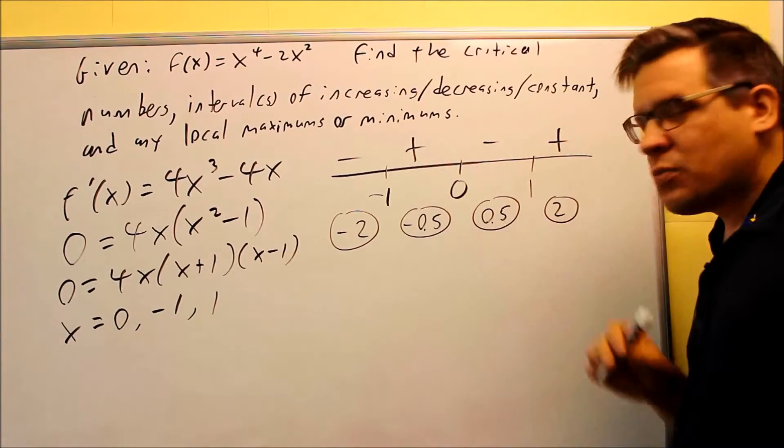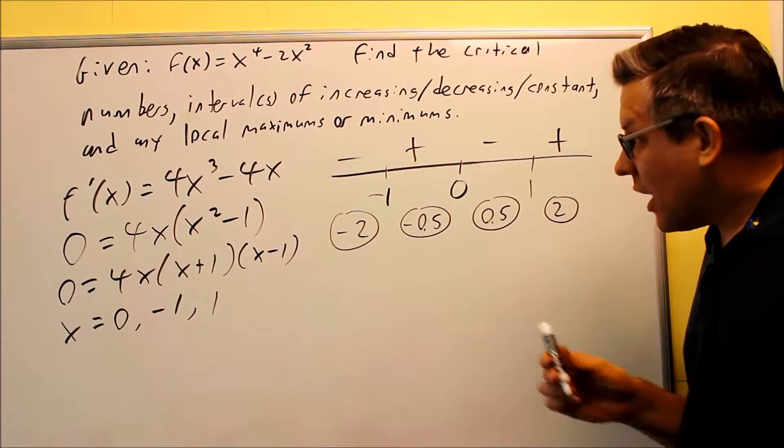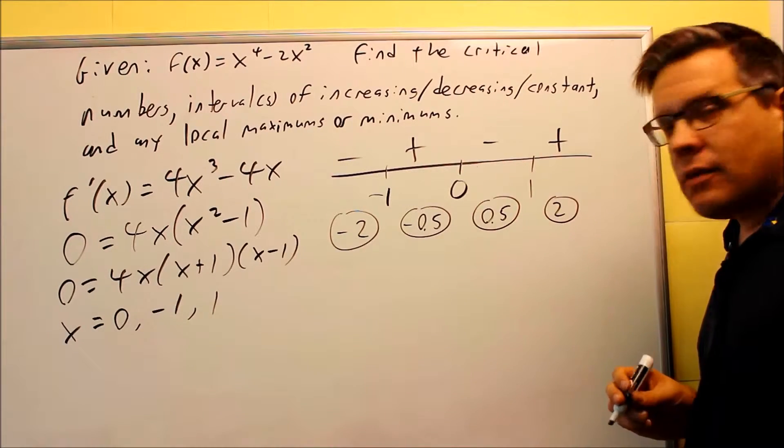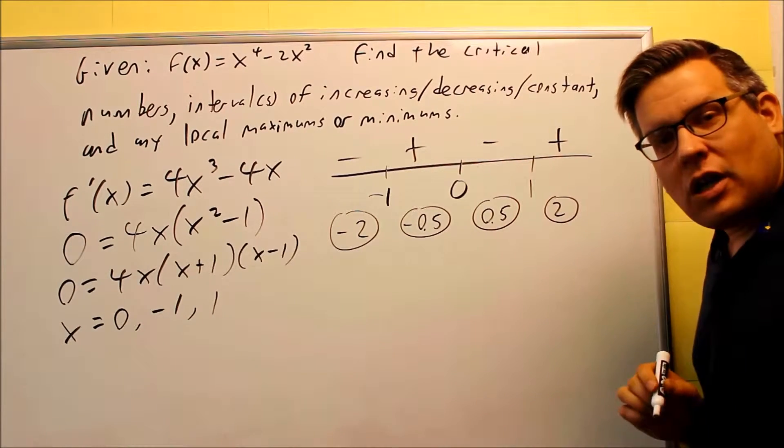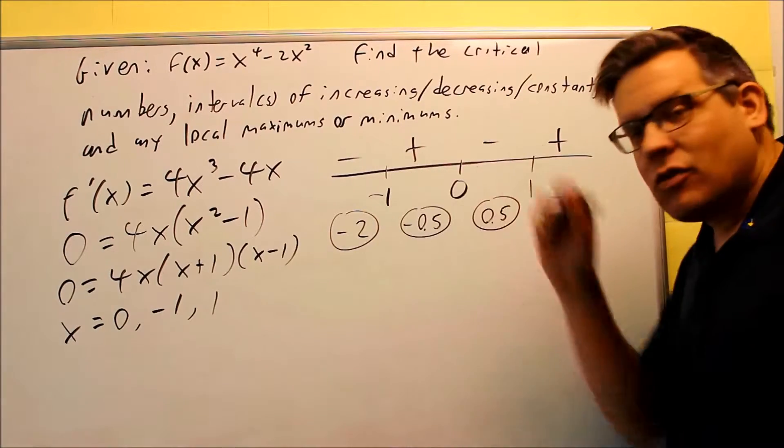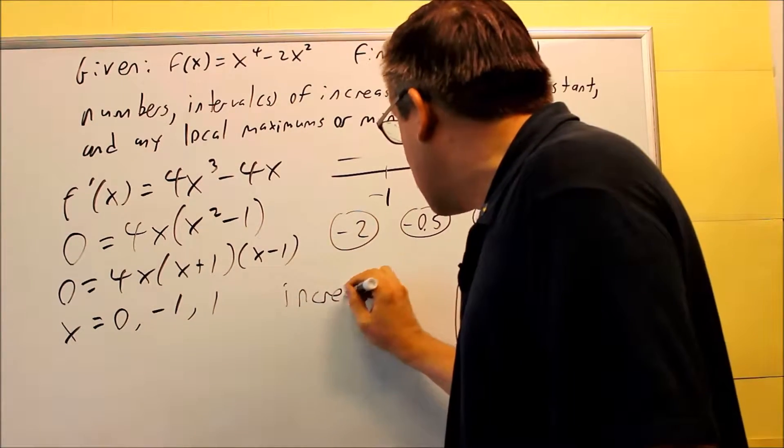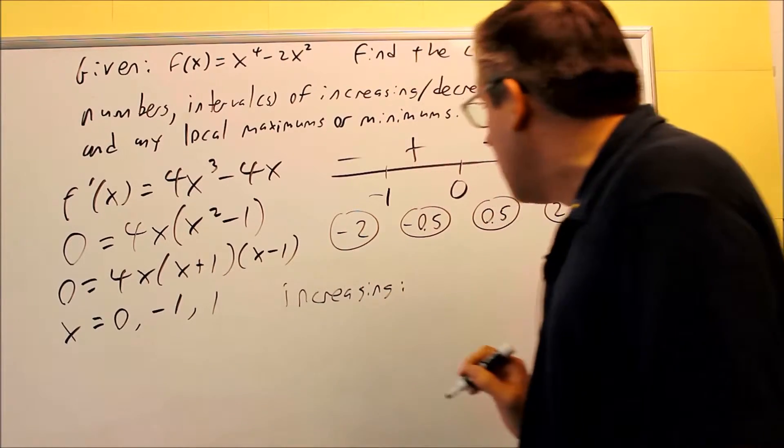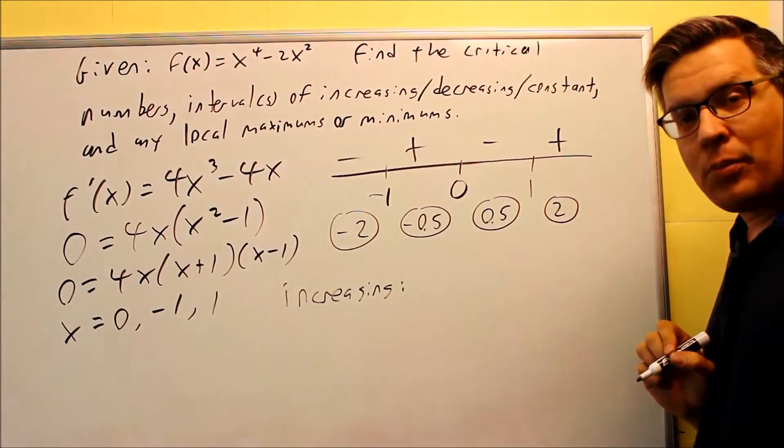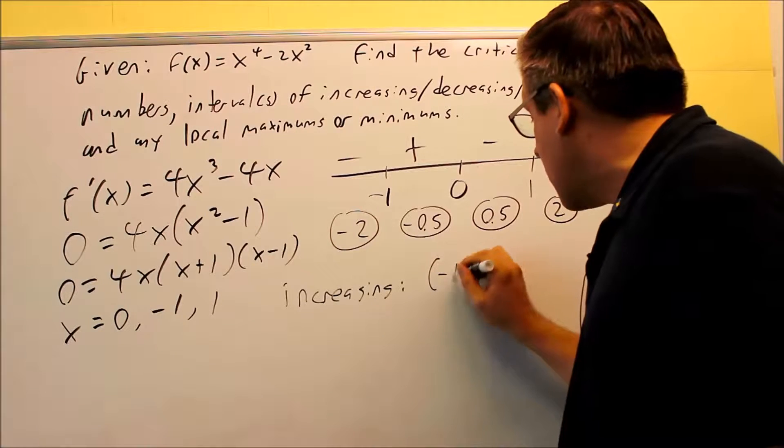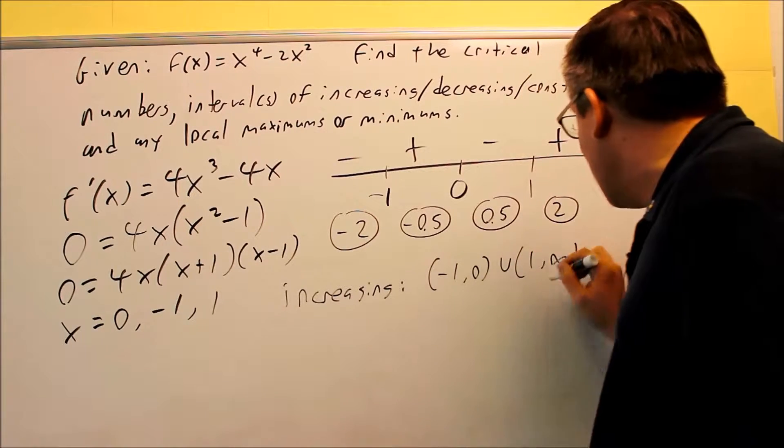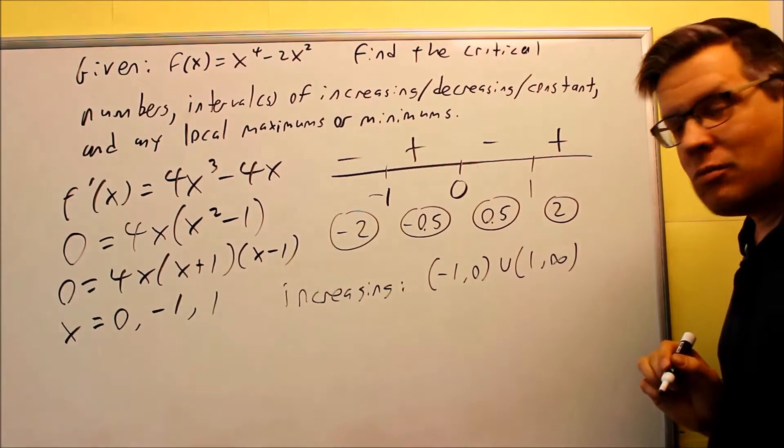Now what does this tell us? This is going to tell us the intervals of increasing and decreasing. Any place where the derivative is positive, that means that the slope is positive, and so then we know it's increasing. If it's negative, then we know it's decreasing. So I'm going to go ahead and write my answers for my increasing intervals. I'm just going to indicate the places where I have a plus. That's from negative 1 to 0, and then from 1 to infinity, just the places that have a plus in it.